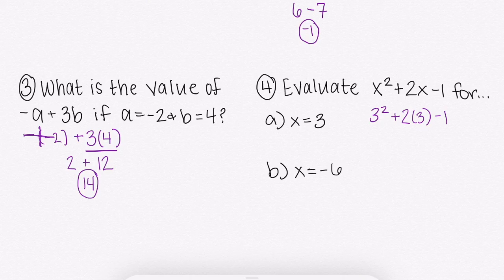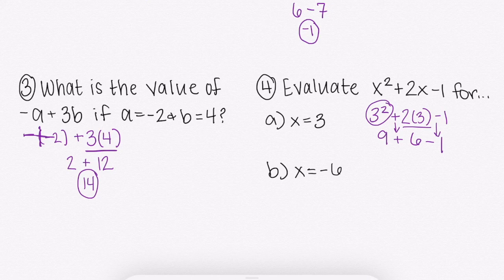Then we're going to use our order of operations, which tells us to do exponents first. 3 squared is 9. Then we are going to do our multiplication. 2 times 3 is 6. Don't forget to bring those symbols down, those operation symbols down with you. And we're just going to add and subtract from left to right. So 9 plus 6 would get us 15 minus 1 will get us 14.